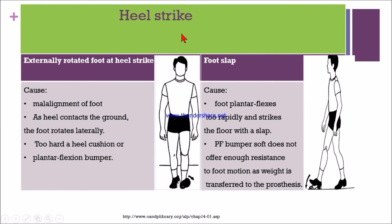Next is heel strike in transfemoral gait deviation. There are two gait deviations at heel strike: external rotation of the limb, or foot slap at heel strike. If the foot is malaligned, as the heel contacts the ground the foot rotates laterally. If there is a too-hard heel cushion, the leg will go into external rotation. If the plantar flexor bumper is too hard, the knee will also go into external rotation.